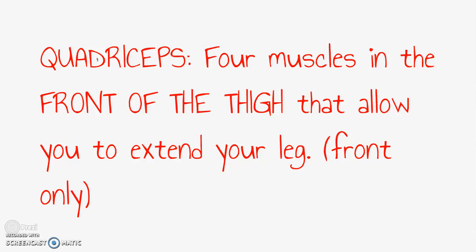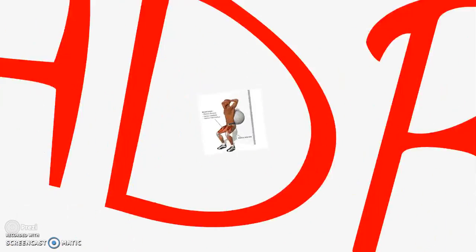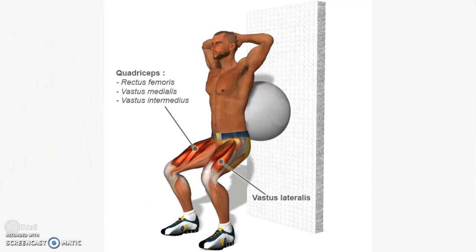The quadriceps are a set of four muscles located on the front of your thigh that help you extend your leg. These are very strong muscles that help you walk, squat, jump, kick, etc. This slide shows the names of the four muscles that make up the quadriceps. One exercise that works your quadriceps is the squat. The nice thing is that you can do them with just your body weight, but you need to be careful on your form so that you don't hurt your knees.